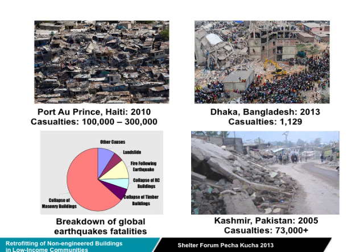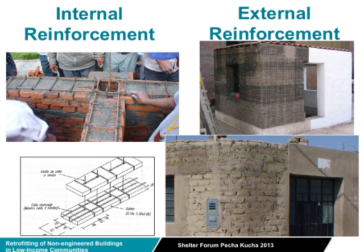In earthquakes, the collapse of buildings is what causes fatalities for a large number of people. Masonry is particularly guilty because it's heavy and brittle. Non-engineered or poorly constructed buildings all around the world are also the prime cause of death or major casualties in large earthquakes.